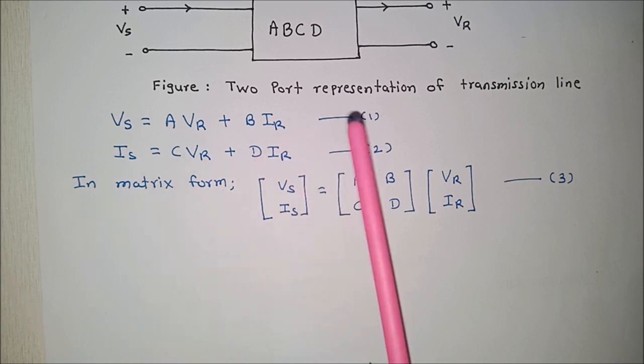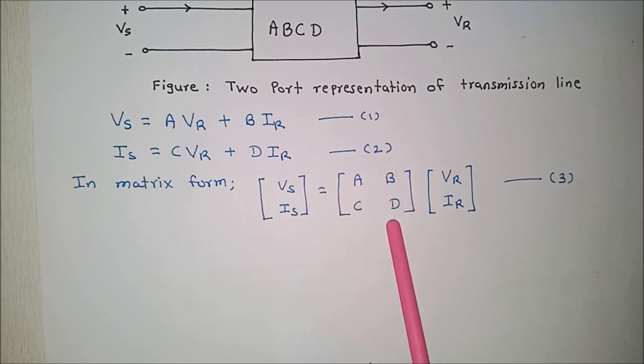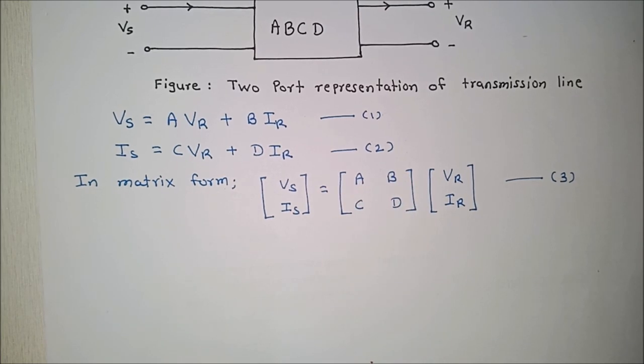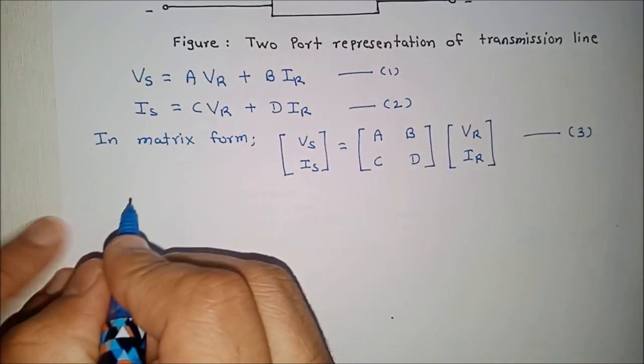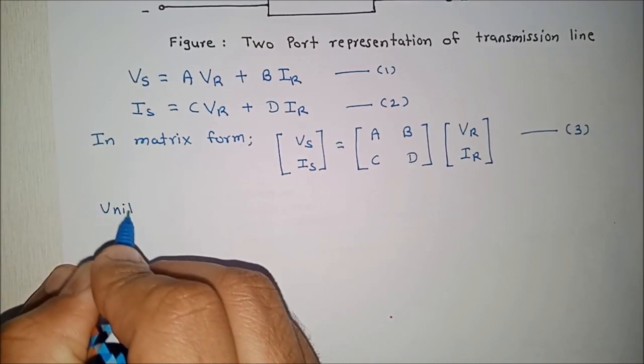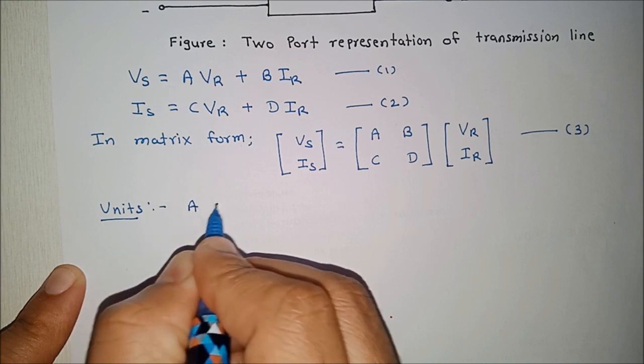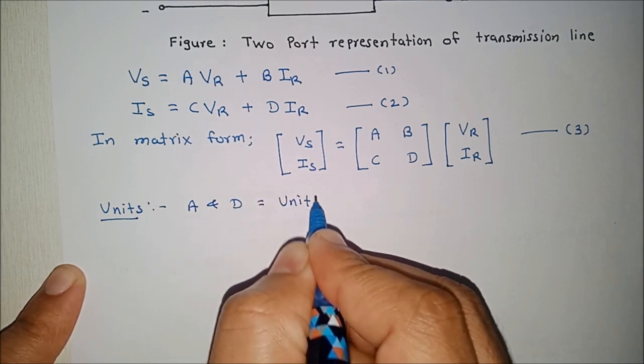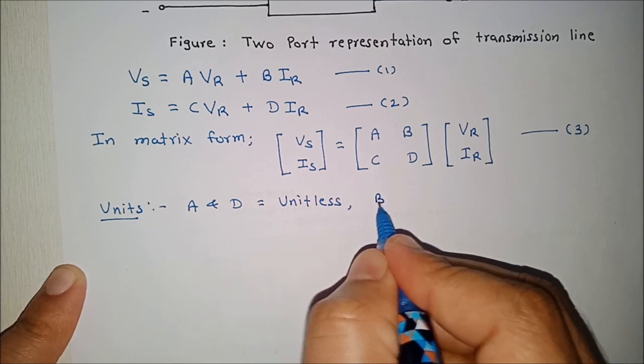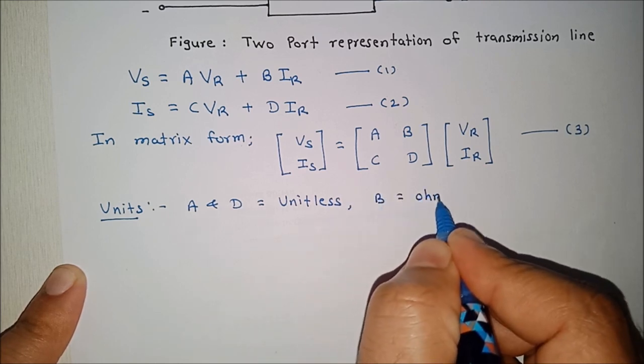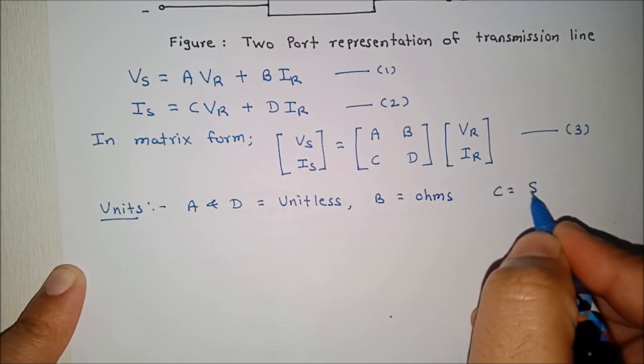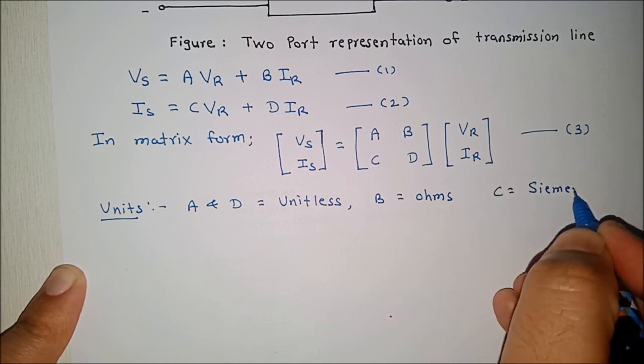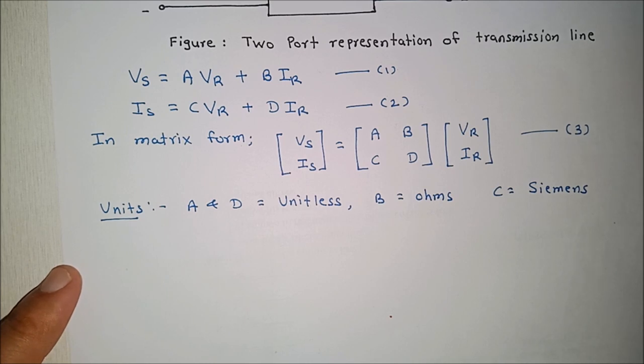So few important points. ABCD are usually complex numbers. Now if you consider the units of ABCD, then A and D are usually unitless. There is no unit, they are constant numbers. B has a unit of Ohms and C has a unit of Siemens. So what it means, B is some kind of impedance and C is some kind of admittance which has a unit of Siemens.